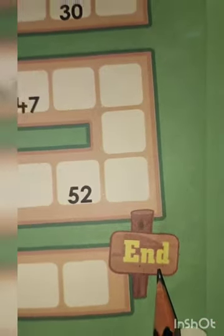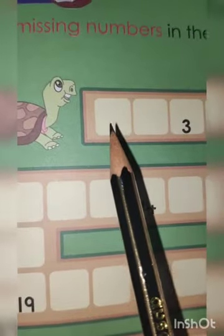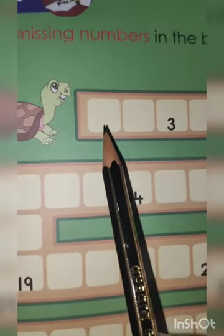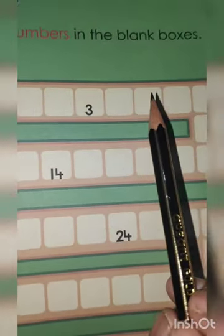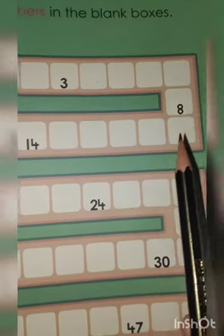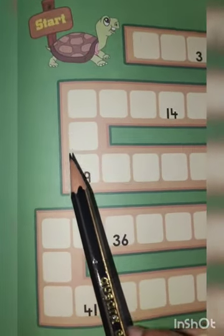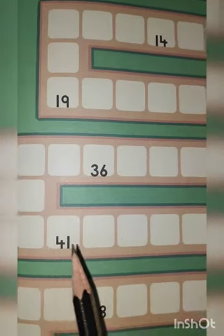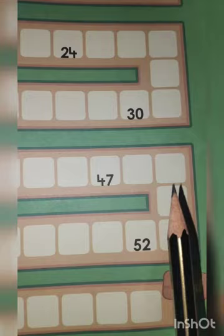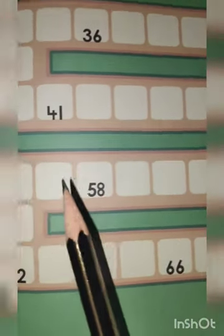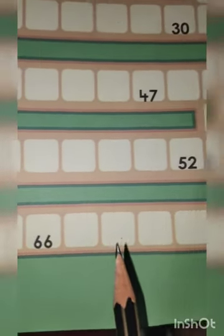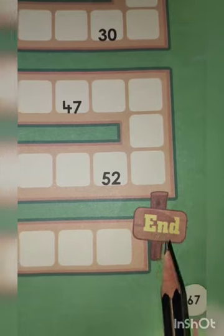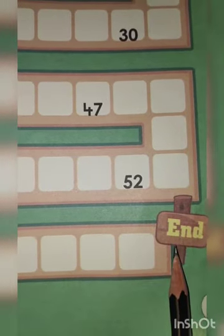End point. Where is end point? Here. So start writing from here and go move like this and turn. Turn. Again turn. Turn. Turn. And turn. This way. And turn. And turn. And turn. And this is your end point.